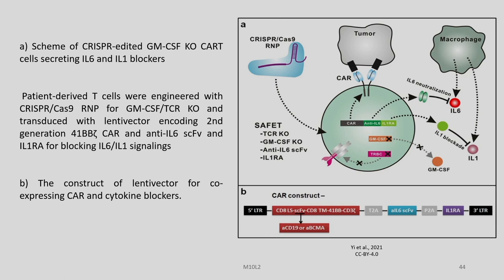A single guide RNA sequence was designed for targeting the promoter motifs located in the first exon of the GM-CSF gene. In panel A, we can see the scheme of CRISPR-edited GM-CSF-KO CAR cells secreting IL-6 and IL-1 blockers. Patient-derived T-cells were engineered with CRISPR-Cas9 RNP for GM-CSF-TCR-KO and transduced with a lentiviral vector encoding a second-generation 41BB-zeta CAR and anti-IL-6 scFv-B and IL-1RA for blocking IL-6 and IL-1 signaling. In panel B, we can see the construct of the lentiviral vector for co-expressing CAR and cytokine blockers.